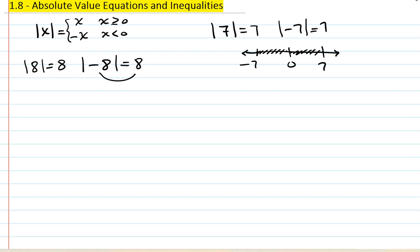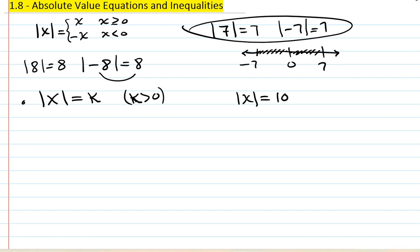Our task is to rewrite absolute value equations so they don't include absolute values. For the case where absolute value of x equals k and k is positive — for example, absolute value of x equals 10 — we look at what values of x satisfy this.